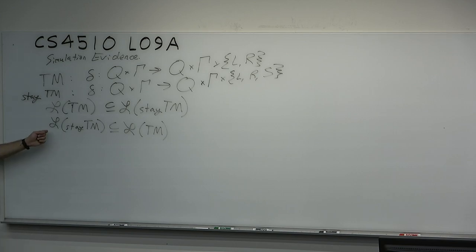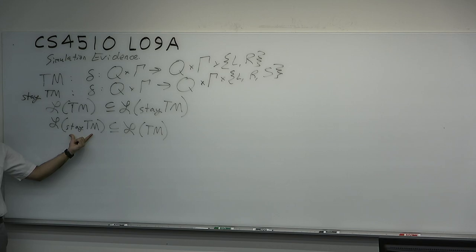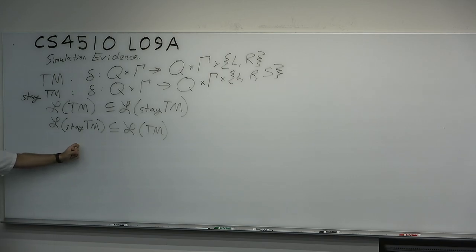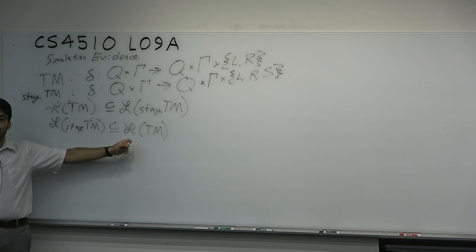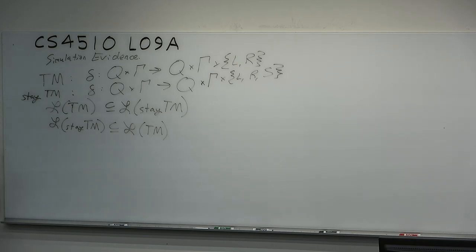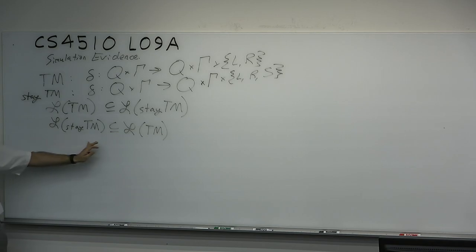This second direction is not obviously true. You've been given a Turing machine with stay that may use that stay instruction in some important way, and it's not obvious you can just remove it. But I claim there is a way to convert any Turing machine with stay to a Turing machine without stay, and that the stay instruction is unnecessary.